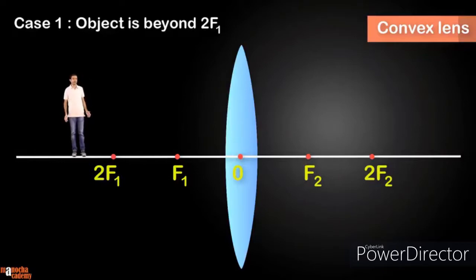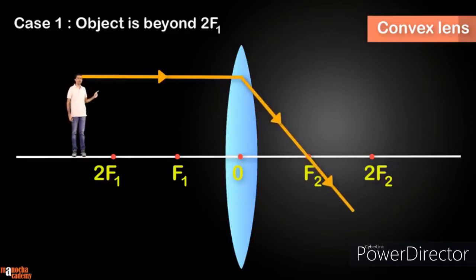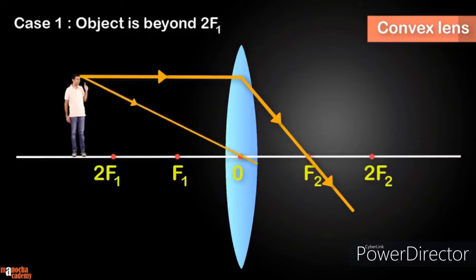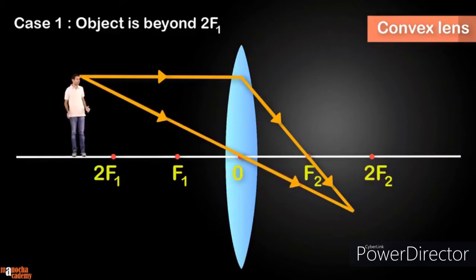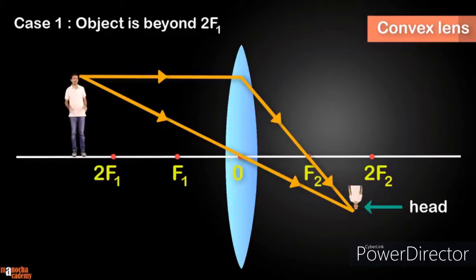Let's use rule one: the ray which is parallel to the principal axis, after refraction by the lens, passes through the focus. This is our first ray. For the second ray, let's use rule two: the ray which passes through the optical center goes straight through undeviated. The intersection of these two light rays represents the image.